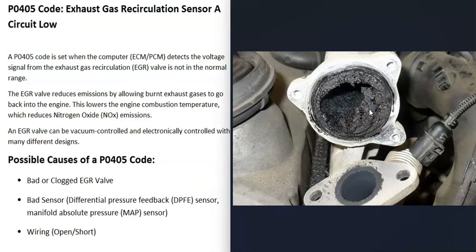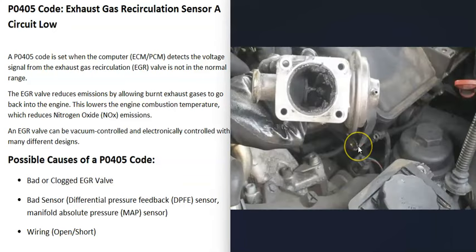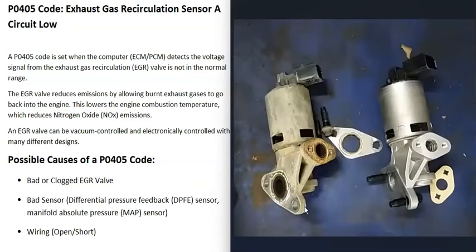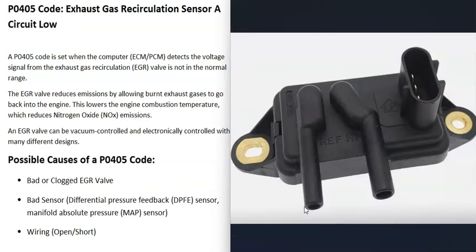A very common problem with EGR valves is that they become clogged up from exhaust gases flowing through them. Many people will take it off, clean it thoroughly, put it back on, clear the code, and see if it comes back — and quite often this does work. But keep in mind it could have also just failed and gone bad, so the first cause on the list is a bad EGR valve.